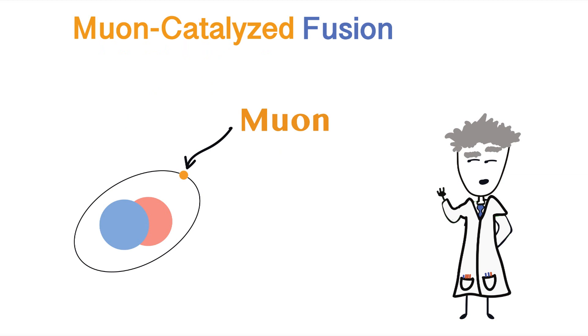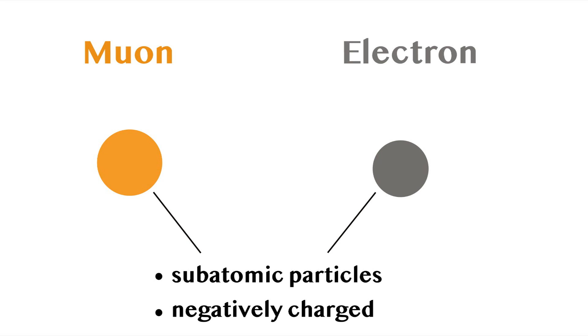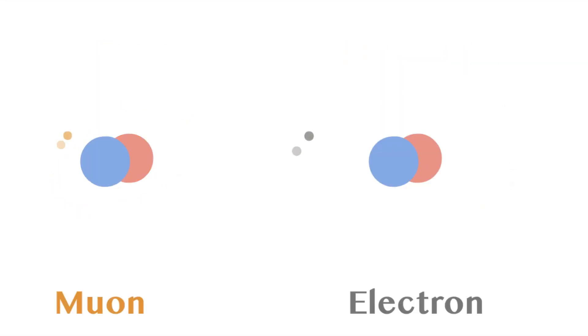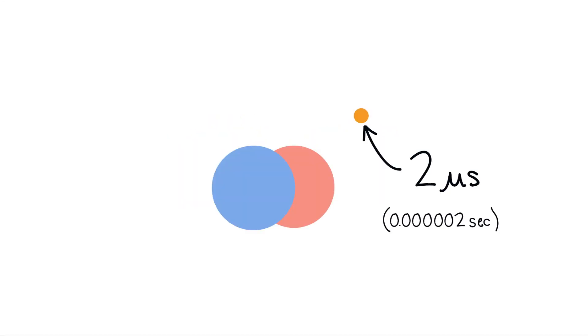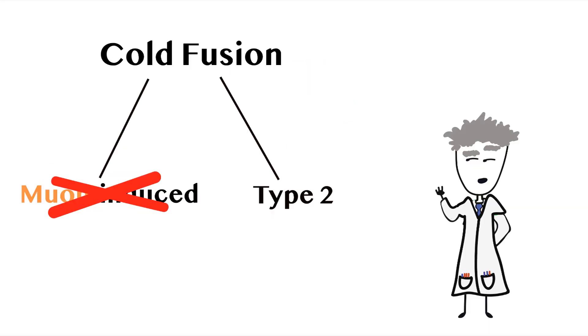The first is called muon-catalyzed fusion and involves using muons instead of electrons, and occurs at room temperature, hence it being cold. Muons are similar to electrons in that they're both subatomic particles and are negatively charged, but muons are much heavier and therefore orbit closer to the nuclei, allowing the nuclei to get within closer proximity to each other without repelling. This close proximity allows fusion to occur under the right conditions. The only downside is muons have very short lifespans of 2 microseconds, and the energy it takes to produce them is more than the energy generated by the fusion reaction. So, at the moment, muon-catalyzed fusion is kind of useless.